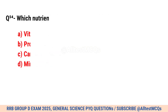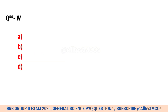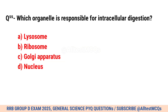Question No. 54. Which nutrient is required in the largest quantity for humans? Correct option is C. Carbohydrates.